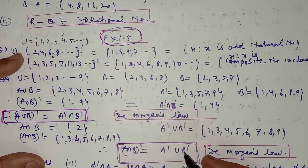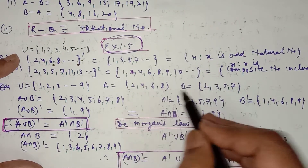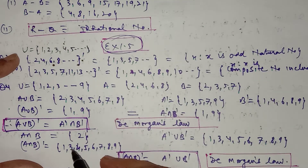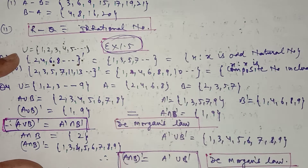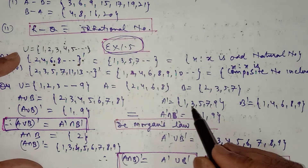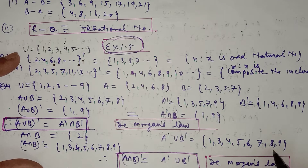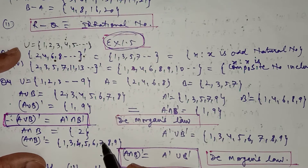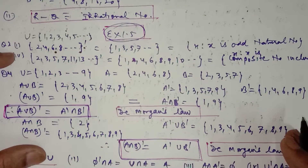Similarly, we have to prove that (A∩B)' = A'∪B', which is also De Morgan's law. First, find A∩B — the element common to A and B is only 2. The complement of this will be {1, 3, 4, 5, 6, 7, 8, 9}. These are the elements of A'∪B', which is equal to this. Therefore (A∩B)' = A'∪B', which is De Morgan's law.